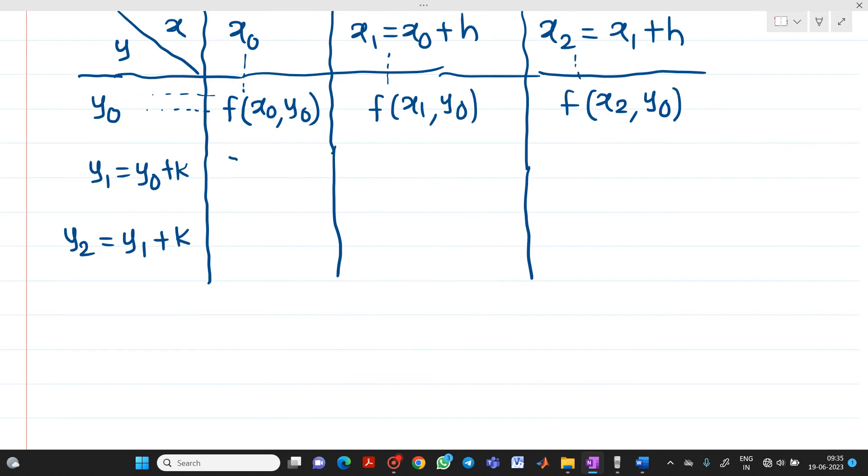Similarly you have to find out this will be f of x equal to x0, y equal to y1. This is f of x equal to x1, y equal to y1. So f of x equal to x2 and y equal to y1. Here if you see for this column is x0, so x equal to x0 and y equal to y2. Then this will be f of x1 comma y2 and this will be f of x2 comma y2.